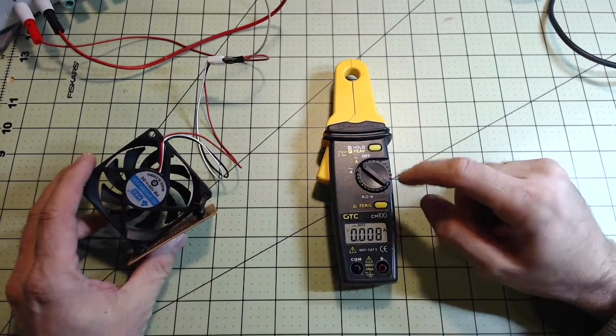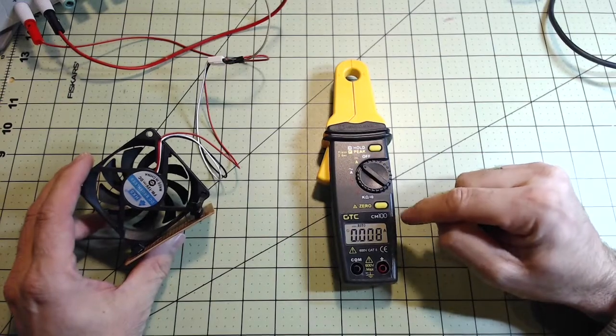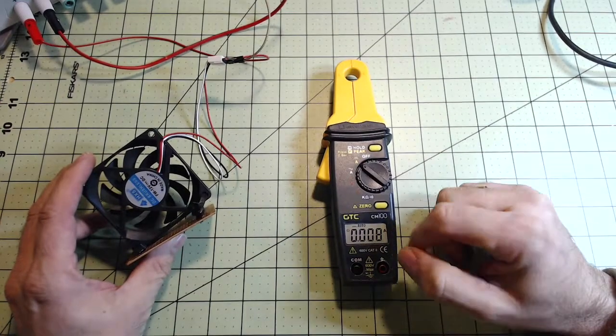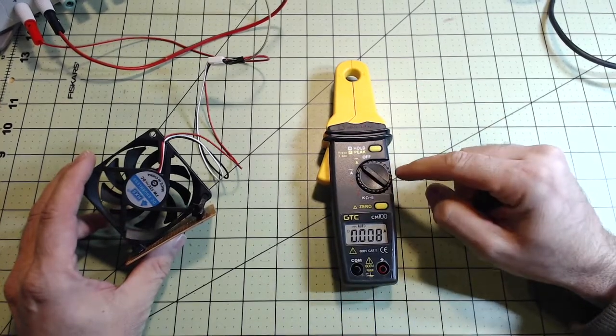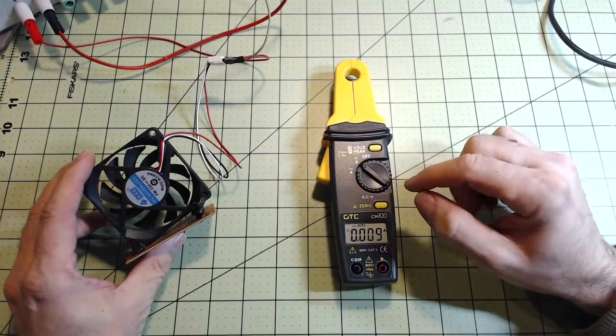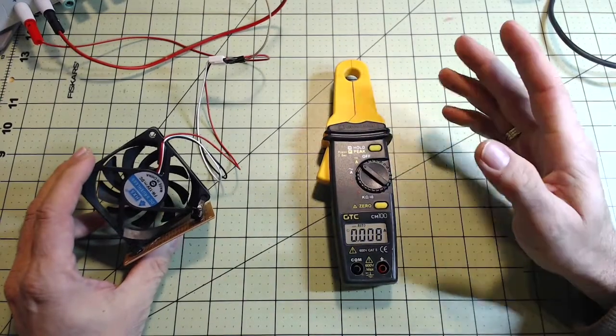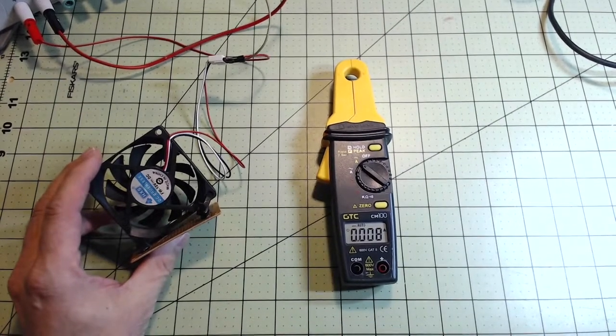I want to demonstrate the accuracy of the new meter I got, the GTC CM100, and I really like it. I'm going to show you how accurate it is. I bought it specifically for one function and that's the DC clamp meter function. I used it last week and found it to be helpful and accurate.